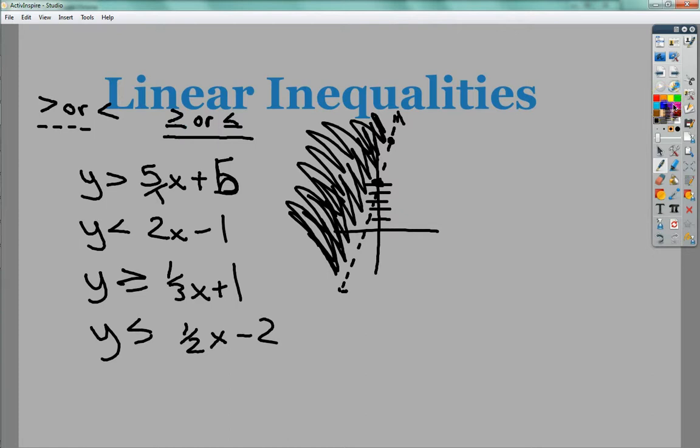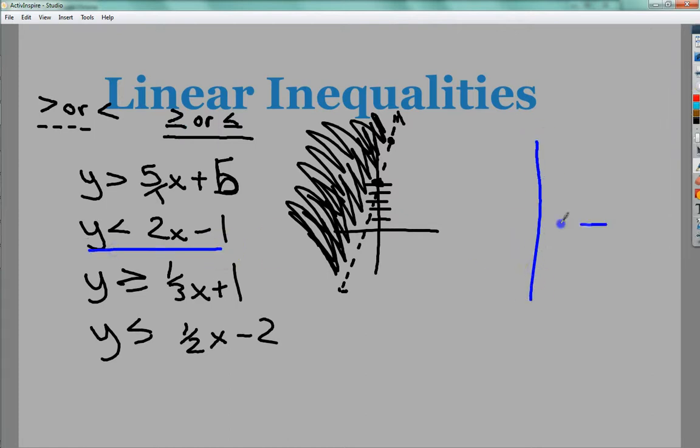So, if I have y is less than 2x minus 1, so say I was doing this one, I would go in and I'd be at negative 1. I'd go up 2 and write 1, that whole thing. In this case, it's another dotted line. And then y is next to the little n, so y is less than. So, I'd shade down.